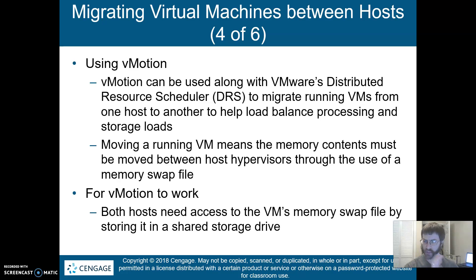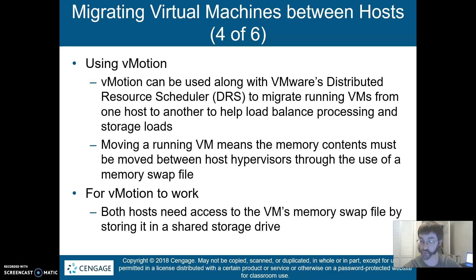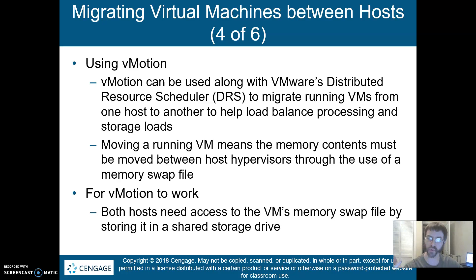When vMotion happens, one of the things that's going to move is the swap file — the memory file of that running VM — because you're moving the full state of the machine. If it's off, all you have to move is the hard drive and the configuration files. If it's running, you need the file that contains its memory state and all of it. You can't have a computer without RAM, so if you lose your RAM you have no computer — you've got to move that or you've got nothing.